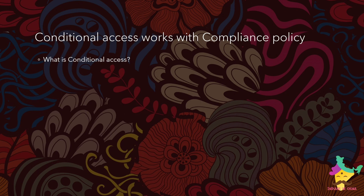Compliance policy में कुछ भी हो सकता है — उसका काम यह है कि क्या आपके पास compliance policy है या नहीं। For example, आप रोड पे जा रहे हो और पुलिस वाले ने रोक लिया और आपको license दिखाने को कहा। उस पुलिस वाले का काम यह नहीं है कि आपको कौन-कौन सी गाड़ियाँ आती हैं या आपका driver license कहाँ बना — बस license एक final legal document बन गया जिसके बेस पर वो आपको drive करने दे सकता है। So, conditional access policy वो police है, और compliance policy वो driver license है।